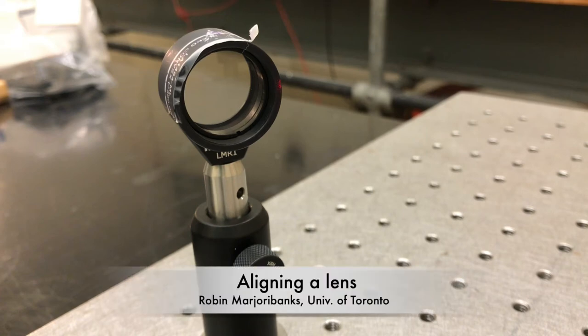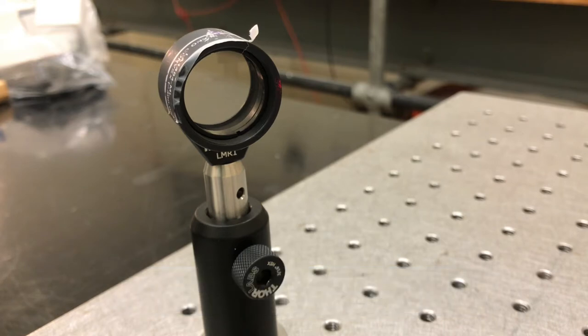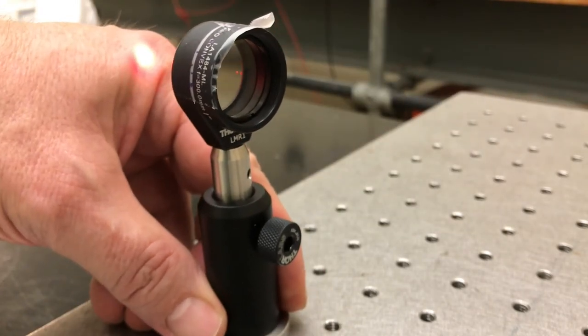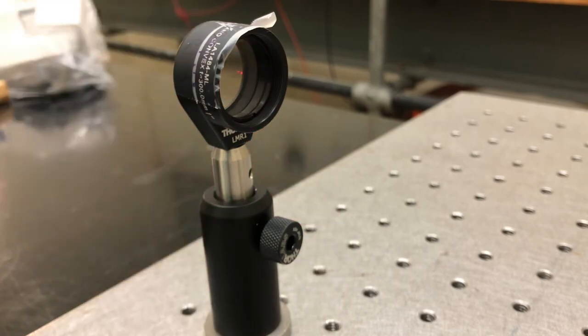That's a good way to align a lens. So here we have a Helium-Neon laser, and we want to align this plano-convex lens into the system. What I'm going to do is bring the beam into the lens and center it. First of all, just visually, approximately, so it hits about the middle of the lens.